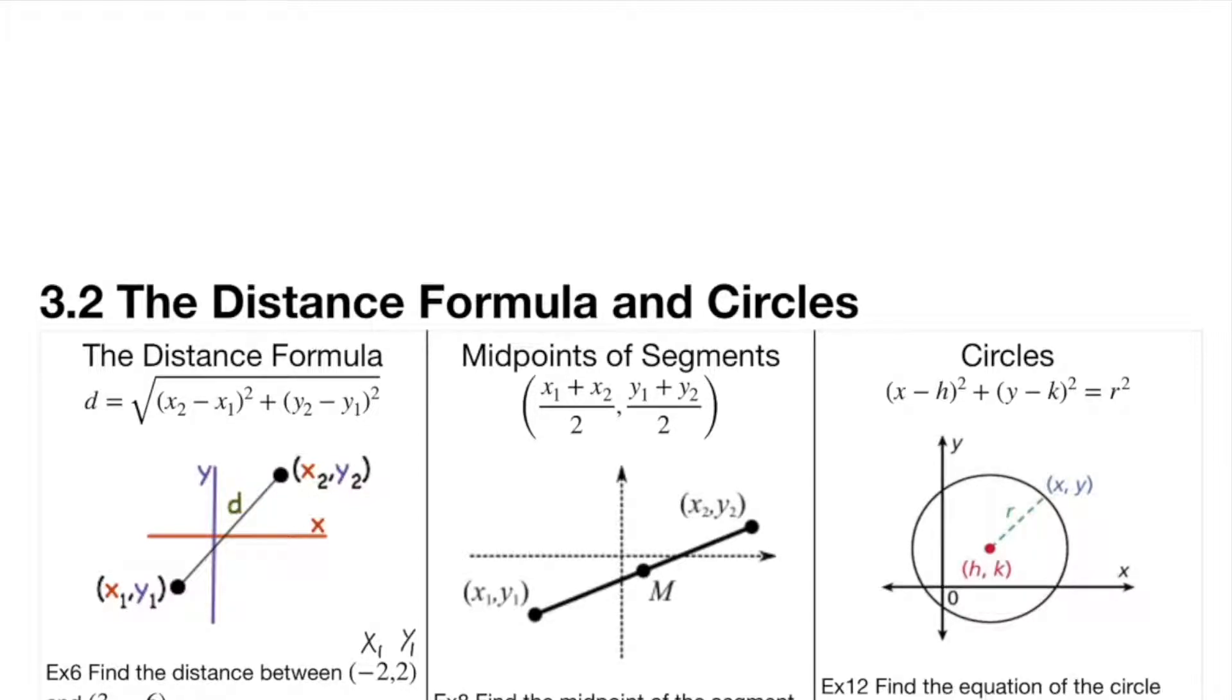What is up my mathletes? This is section 3.2, the distance formula and circles. I'm going to be going through this section a little bit faster than normal, so I'd expect that you pause it. The reason I'm doing it that way is because everything's already been pre-written out, so feel free to pause it whenever you want. But I'm just going to talk, and here we go.